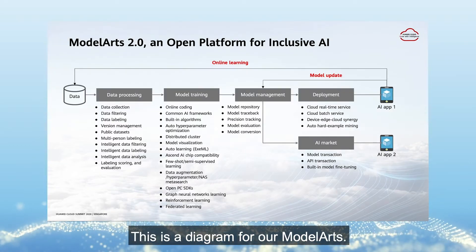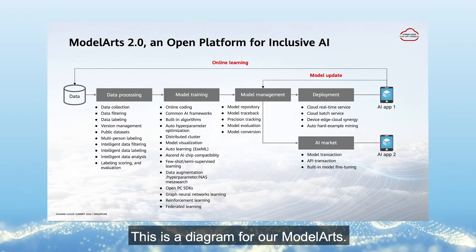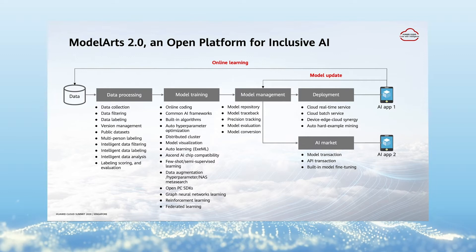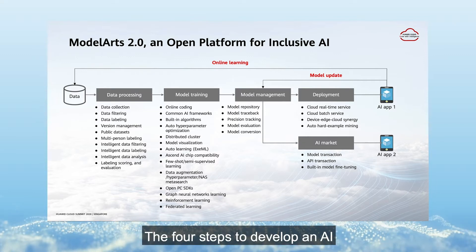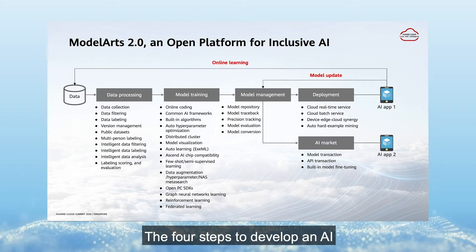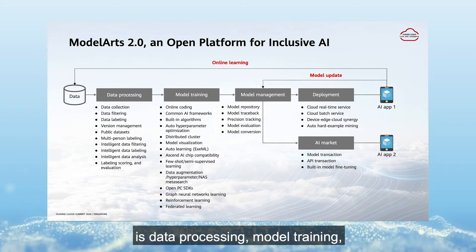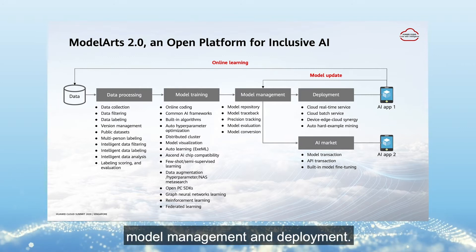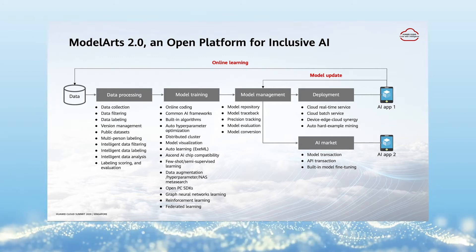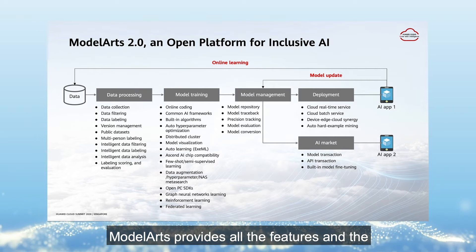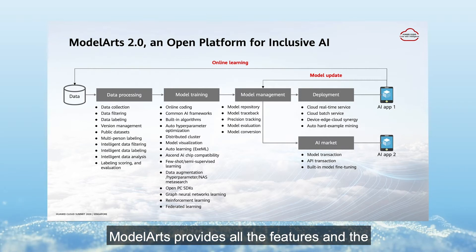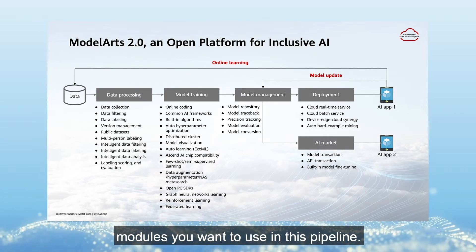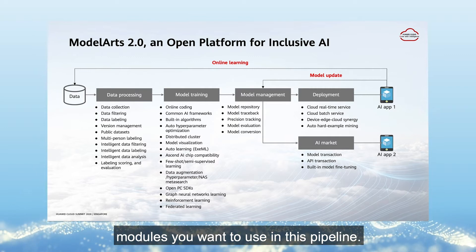This is a diagram for Model Arts. You can see four parts — the four steps to develop an AI application are: data processing, model training, model management, and deployment. Model Arts provides all the features and modules you need in this pipeline.